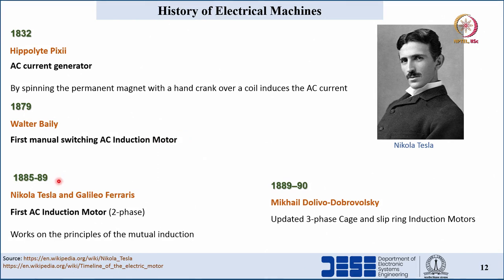Later, from 1885 to 1890, Nikola Tesla, Galileo Ferraris, and Mikhail Dolivo-Dobrovolsky invented induction motors. The first induction motor was invented by Tesla and Ferraris as a two-phase induction motor working on the principles of mutual induction per Faraday's laws. In 1890, Dolivo-Dobrovolsky updated this machine with three-phase cage and squirrel cage induction motors.